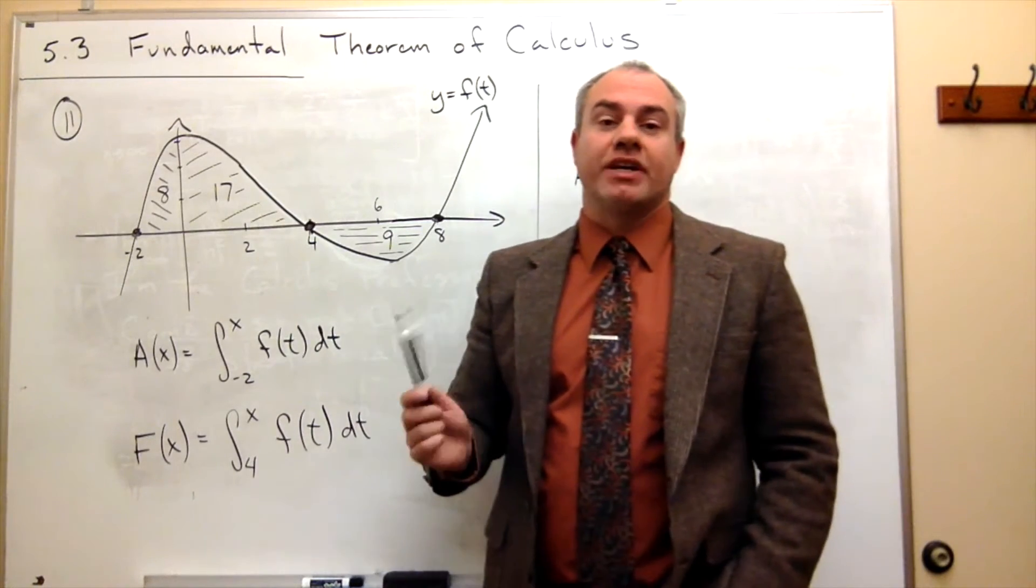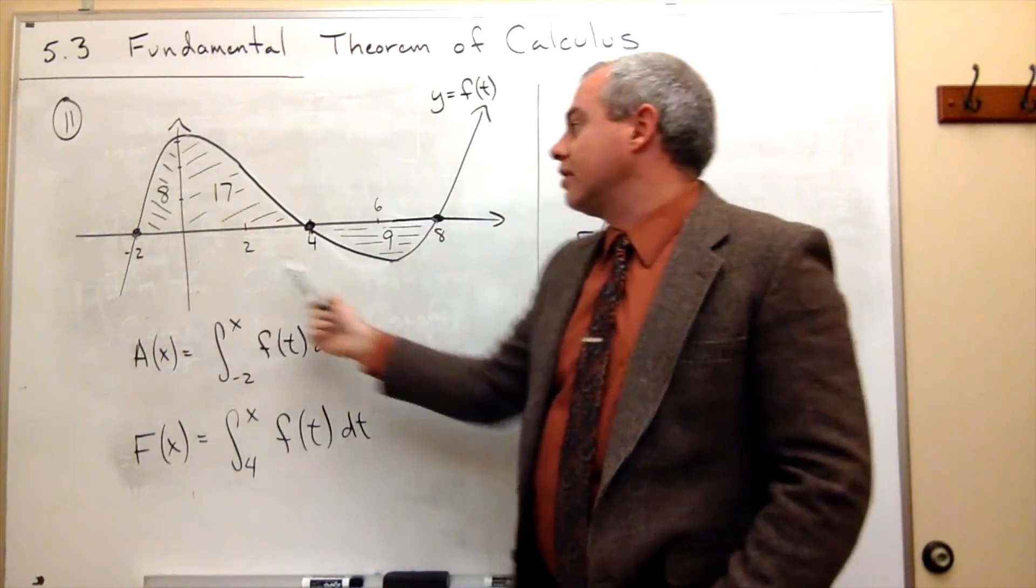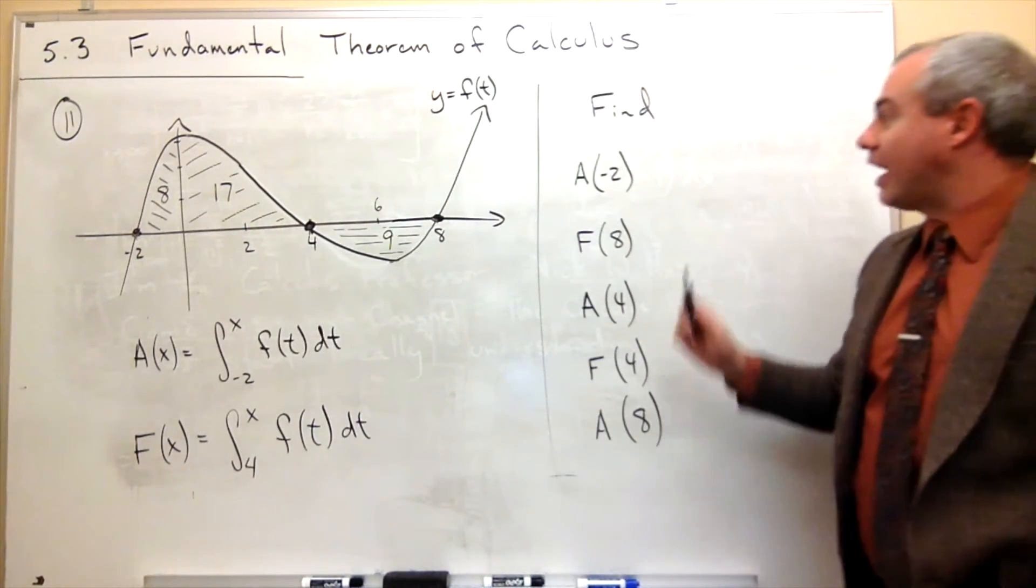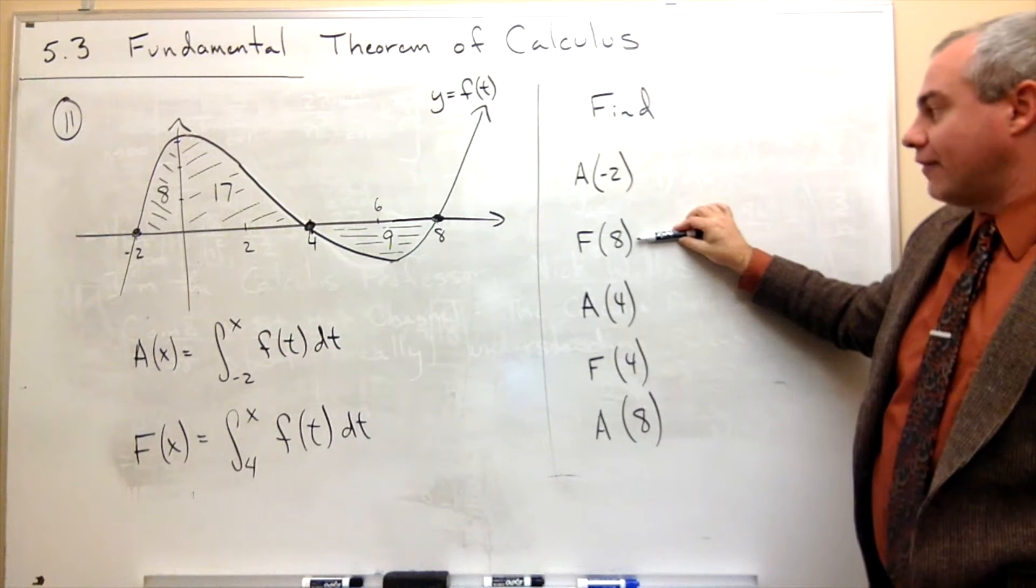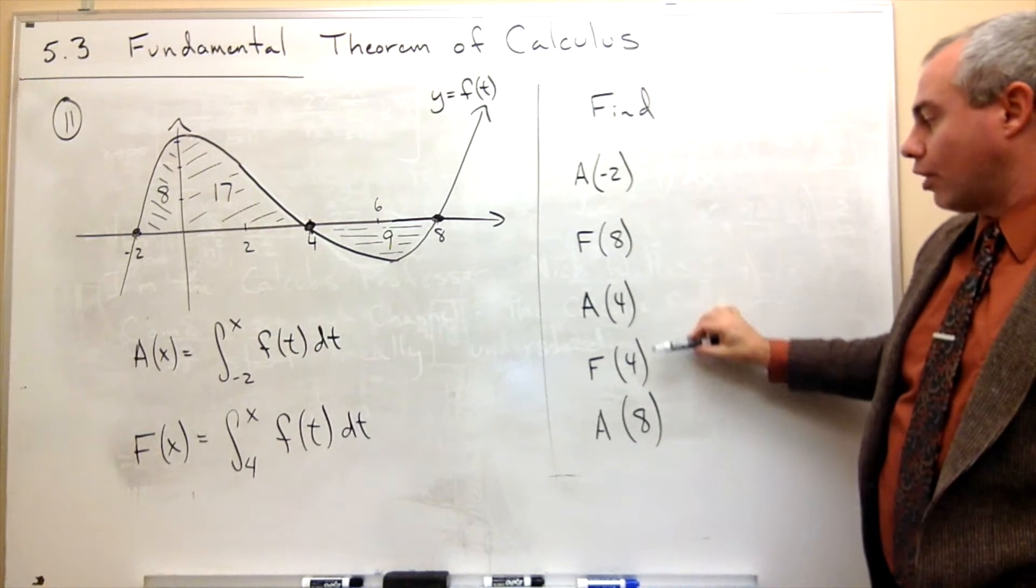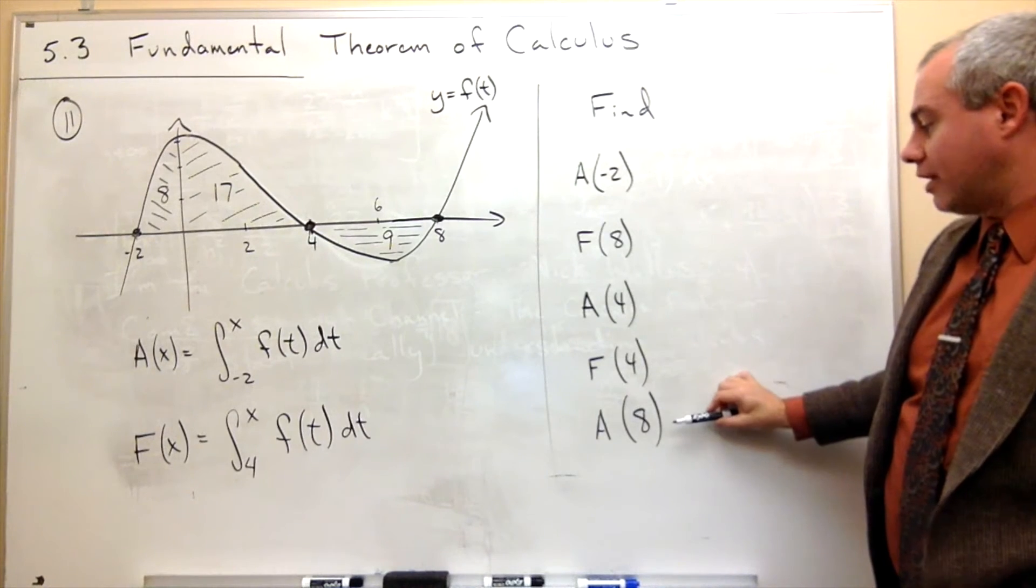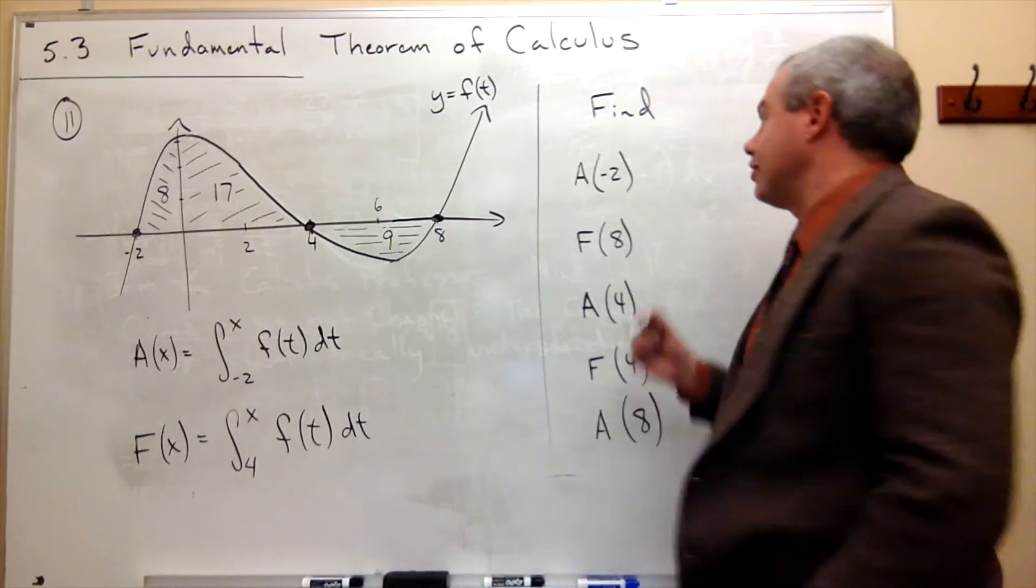So given that, and given this graph, we'd like to find five different values. We'd like to find A of negative 2, F of 8, A of 4, F of 4, and A of 8. Okay, let's do it.